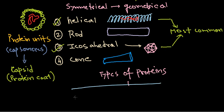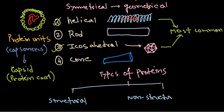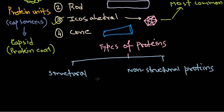One type of protein is called structural protein. Another type is called non-structural protein. Usually all the capsid and all the structure are formed from the structural type of protein. Among the structural proteins we can have capsid proteins.